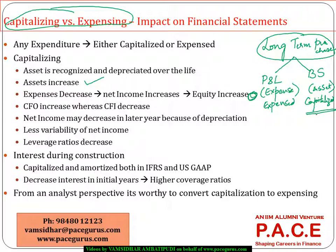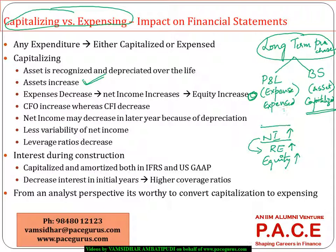Whenever I am capitalizing, the total assets will go up and the expenses will come down. Because the expenses are coming down, the net income is planned to go up. And if the net income is going up, this net income goes as retained earnings on the balance sheet into the liabilities and owner's equity section, which means the overall equity will also go up. So these are the benefits of capitalizing over expensing.